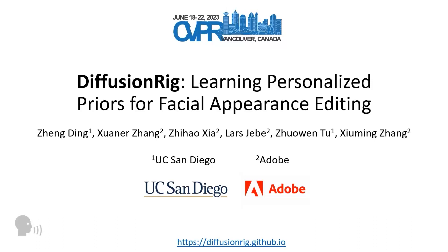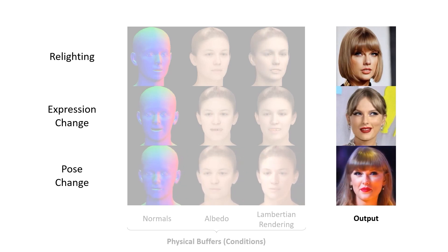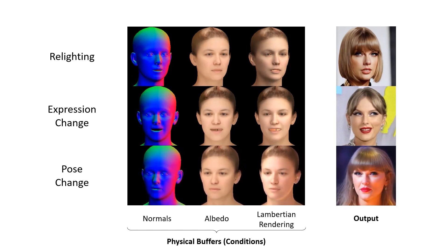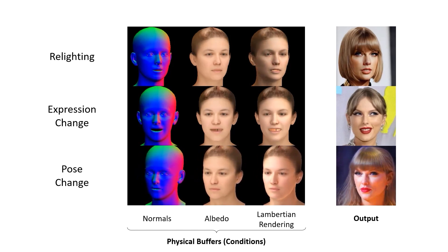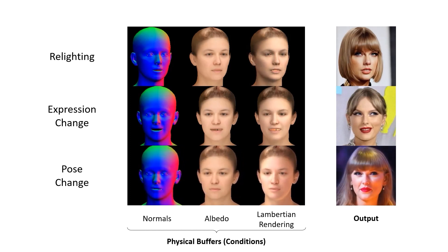In this video, we introduce Diffusion Rig: learning personalized priors for facial appearance editing. Diffusion Rig enables personalized facial appearance editing including relighting, expression change, and pose change, by driving a diffusion model with physical buffers such as surface normals, albedo, and Lambertian rendering from a coarse 3D model.